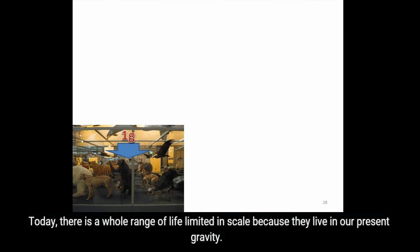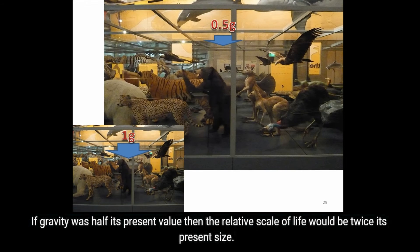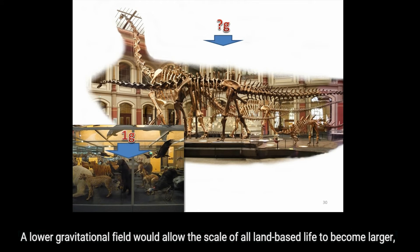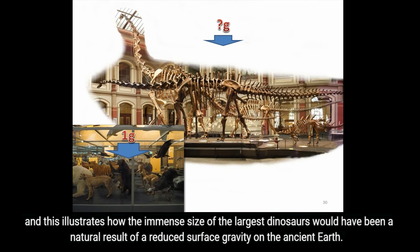Today, there is a whole range of life limited in scale because they live in our present gravity. If gravity was half its present value, then the relative scale of life would be twice its present size. If gravity was less on the ancient Earth, we would expect life to be larger, and this is exactly what we see. A lower gravitational field would allow the scale of all land-based life to become larger, and this illustrates how the immense size of the largest dinosaurs would have been a natural result of a reduced surface gravity on the ancient Earth.